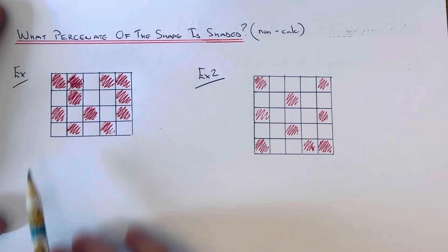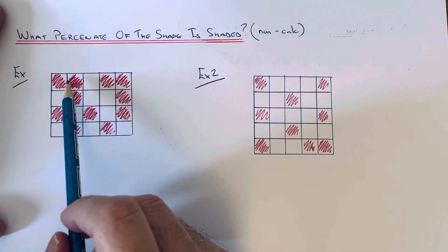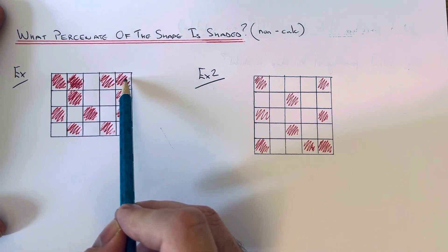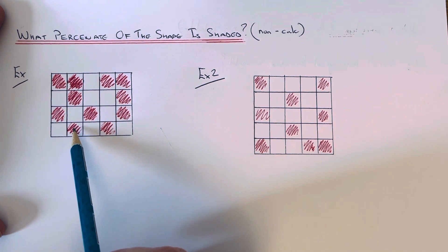First of all, I'm going to write down the fraction of the shape which is shaded red. So on the top of the fraction, I count how many red squares are shaded. So we've got 1, 2, 3, 4, 5, 6, 7, 8, 9, 10, 11.